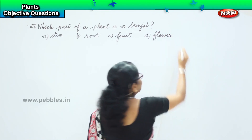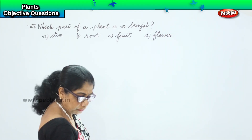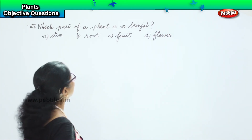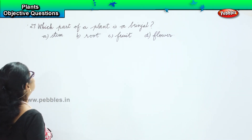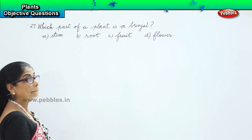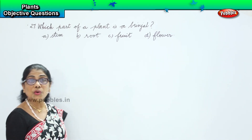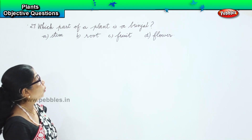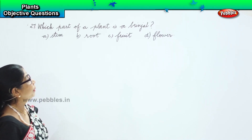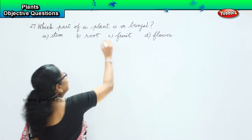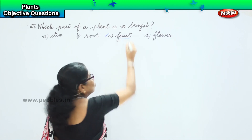They are asking us which part of a plant is a brinjal. Is it a stem? No. Is it a root? No. Is it a flower? No. Brinjal — option C — is a fruit.